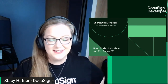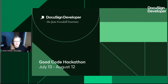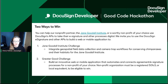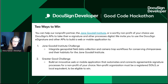We have a special guest, Chase with Esri, who's going to be here. Before that, let's run through our Good Code hackathon basics. We have two ways to win. We have our Jane Goodall Institute challenge, which is where you'll integrate geospatial field data collection and camera trap workflows for conserving chimpanzees and their habitats. This is where you want to pay special attention to this live stream.